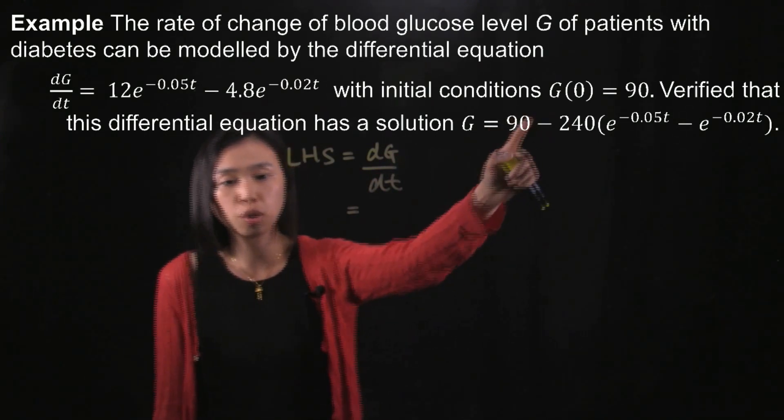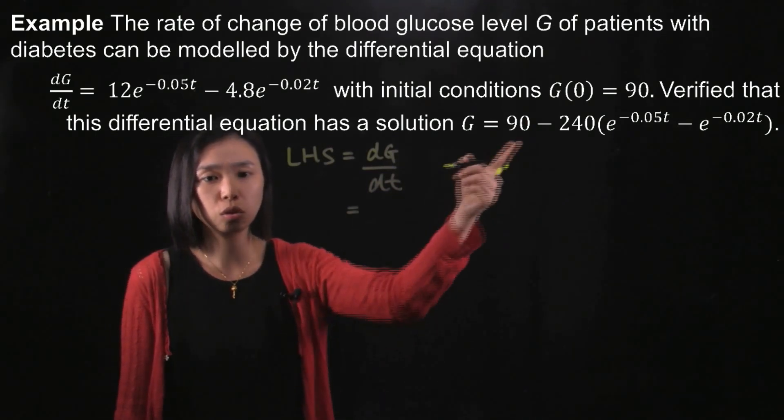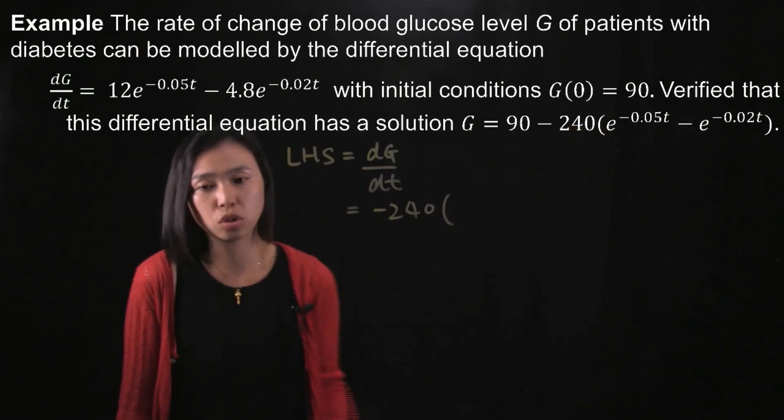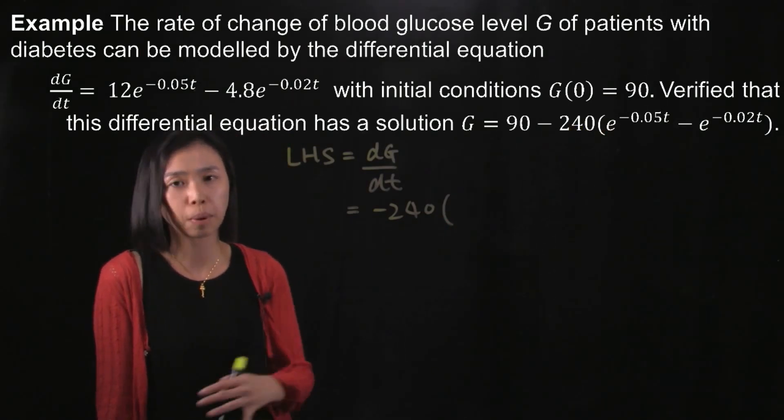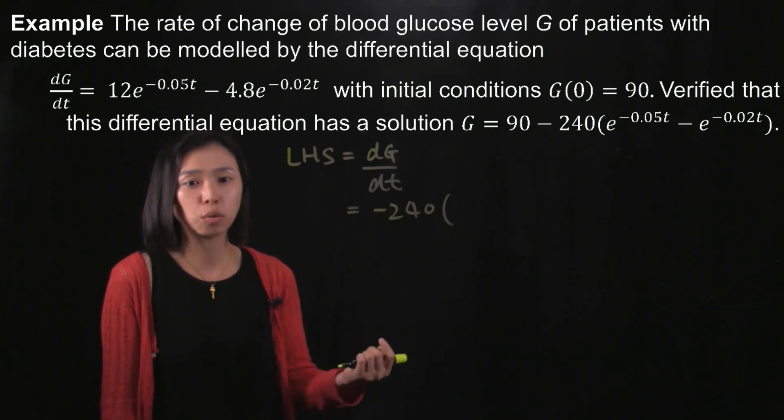I will start with the first term 90. When you differentiate a constant, you will get zero, and then you keep the negative 240 and then you need to use the chain rule. So remember, if you have not yet started your calculus, go back to your calculus app or anything online and learn how to do chain rule.